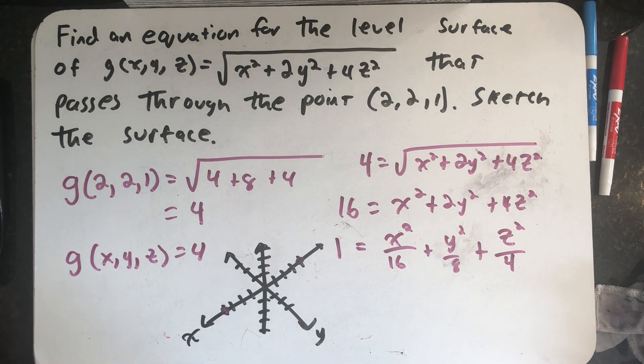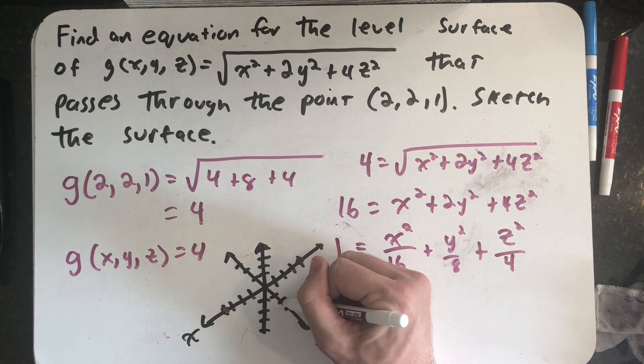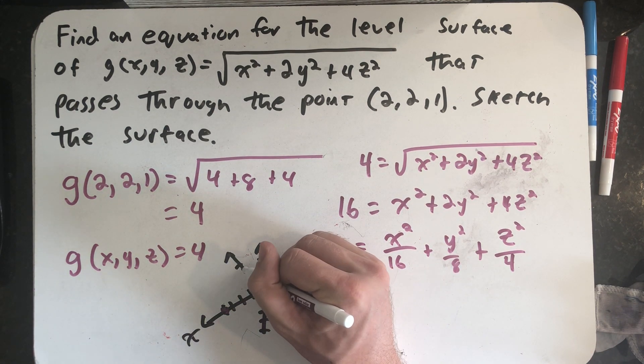I need to know the square root of 8, which is 2 root 2, which will be about 2.8. So I need to go this way about 2.8 and this way about 2.8.